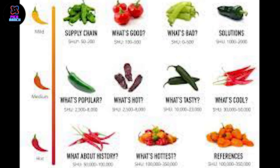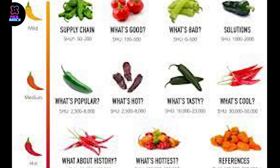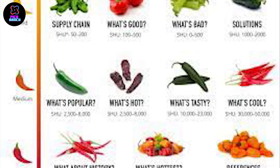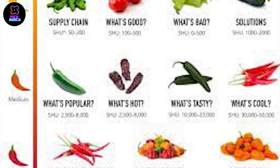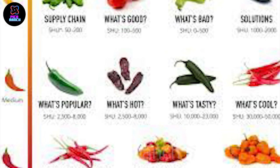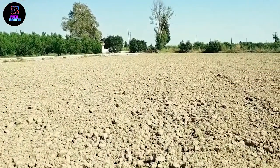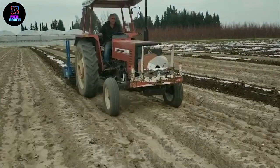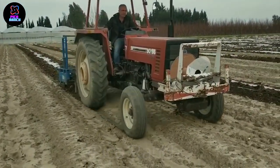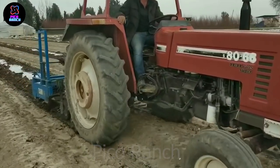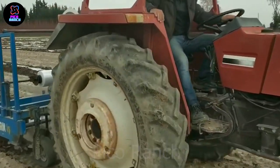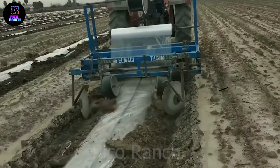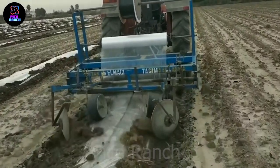Each type of chili pepper can be used in multiple dishes and significantly influences the cuisine of different cultures worldwide. Soil is a crucial factor in the chili pepper growth process. The ideal pH for chili peppers is between 6.0 and 6.8, promoting optimal nutrient absorption.